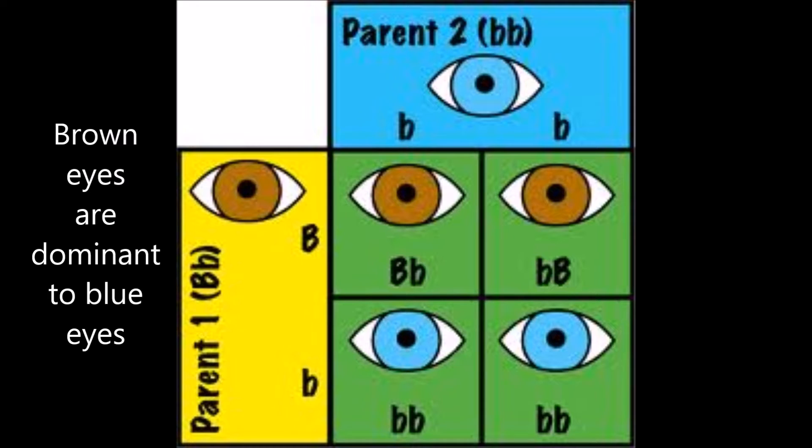Though your folks have two genes for a trait, they each pass but one gene to you. Which means, for that given trait, you don't get four genes, you get two.